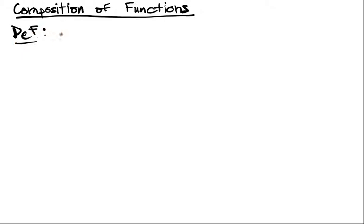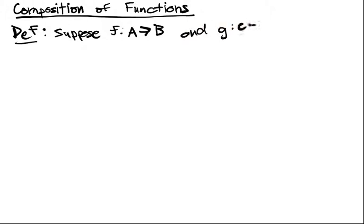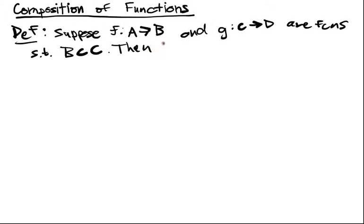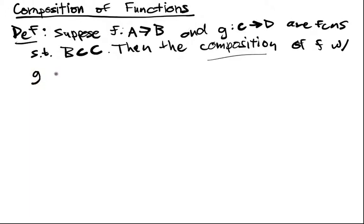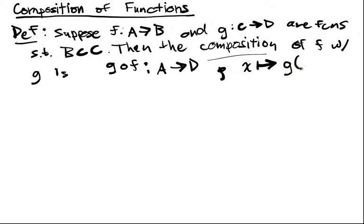Definition. Suppose f from A into B and g from C into D are functions such that B is a subset of C. Then the composition of f with g is well-defined: g composed with f goes from A into D, and it's defined as x mapping to g of f of x.